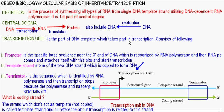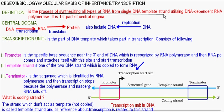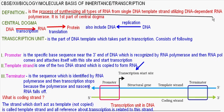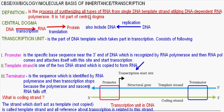What is transcription? Transcription is the process of synthesizing all types of RNA from a single DNA template strand, and this process is done by the help of the enzyme DNA-dependent RNA polymerase. It is the first part of the central dogma.